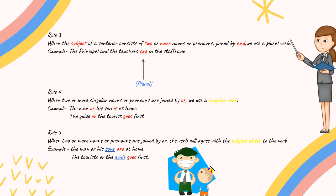The guide or the tourist goes first. Here, we are talking about the man or his son, which means two singular people, which is used by the word is. In the second example, the guide or the tourist goes first, which means we are talking about two individual people, by which we use the word goes.